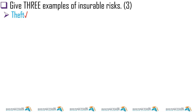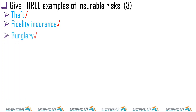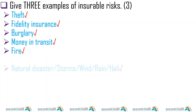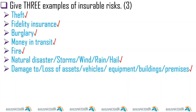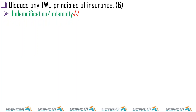Give three examples of insurable risk — these are things that insurance companies are willing to take risk over. We have money in transit, fire, natural disasters like storms, wind, rain, and hail, damage and loss of assets, vehicles, equipment, building premises, and injuries on premises.